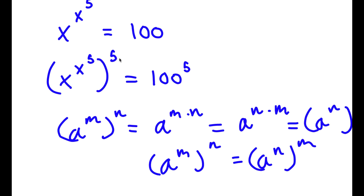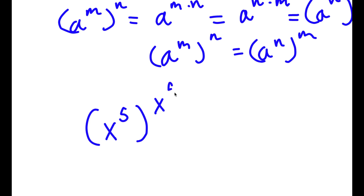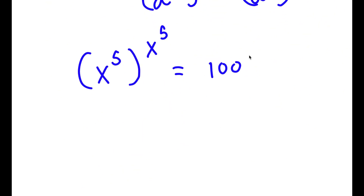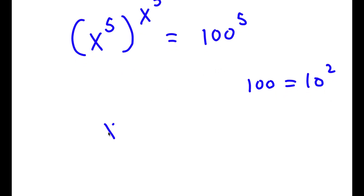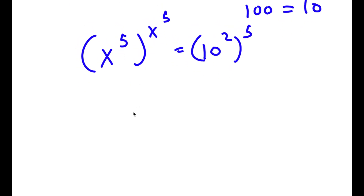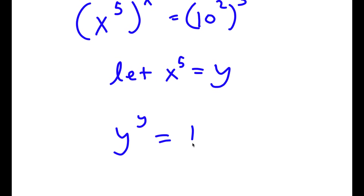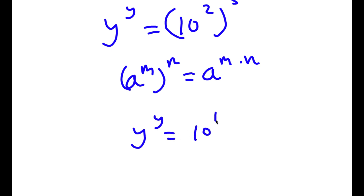So I have x to the power of x to the power of 5, all to the power of 5. Thinking of x to the power of 5 as m and 5 as n and switching gives x to the power of 5 to the power of x to the power of 5, equal to 100 to the power of 5. Now 100 is 10 squared, so I get x to the power of 5 to the power of x to the power of 5 equals 10 squared to the power of 5. Letting y equal x to the power of 5, I get y to the power of y equals 10 to the power of 2 to the power of 5, which equals 10 to the power of 10, since 2 times 5 is 10.